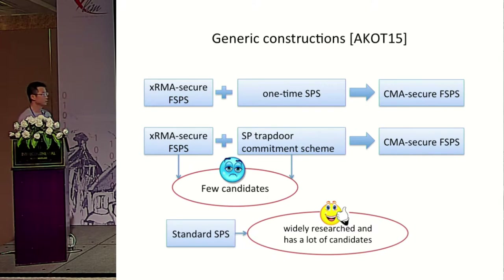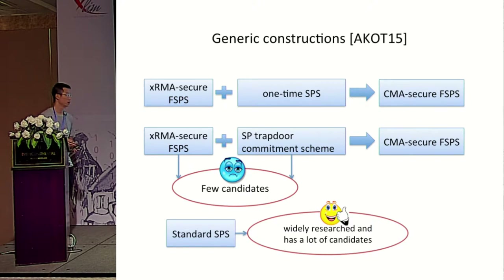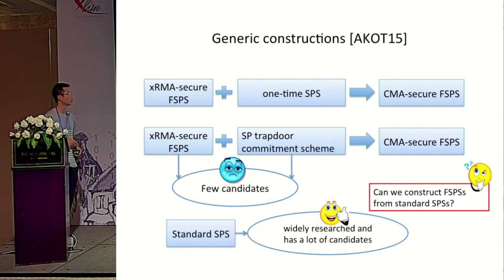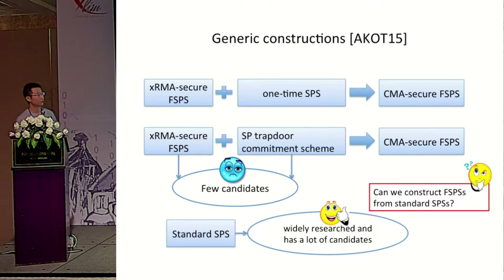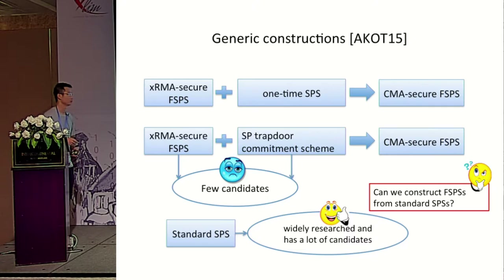The fully automorphic instantiations derived from their constructions are not very efficient. The reason is that the verification key of their XRMA-secure FSPS scheme consists of elements in two groups, but the messages only consist of elements in one group. So they need to additionally use another one-time signature scheme, which makes it less efficient. Although there are few candidates for the XRMA-secure FSPS and Trapdoor Commitment scheme, the standard structure-preserving signature schemes are widely researched and have many candidates.